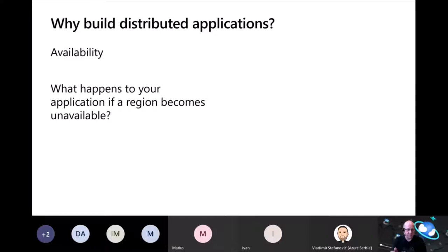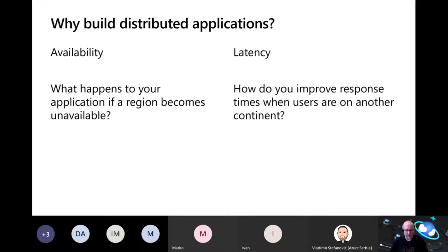A way to avoid that is to build and deploy your application into multiple regions. The second reason is latency. If you've got customers all around the world — in Europe, Eastern Europe, Western Europe, Asia, or the Americas — how do you improve response times when your users are on another continent? The closer you get the application and the data to your users, the lower the latency, because those requests don't have to travel as far.